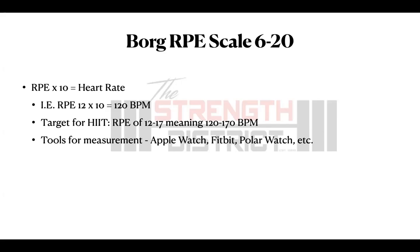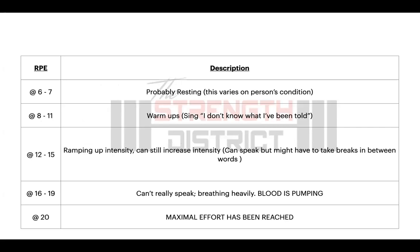If you don't have a smartwatch, you can use the RPE scale itself. If you're somewhere between an RPE of 6 or 7 — meaning roughly 60 to 70 beats per minute — you're probably at rest, just going about your day. If you're between 8 to 11, around 80 to 110 beats per minute, you're probably warming up. One of the easiest ways to determine this is to try singing a simple song. If you can sing it comfortably, you're still in the warm-up phase.